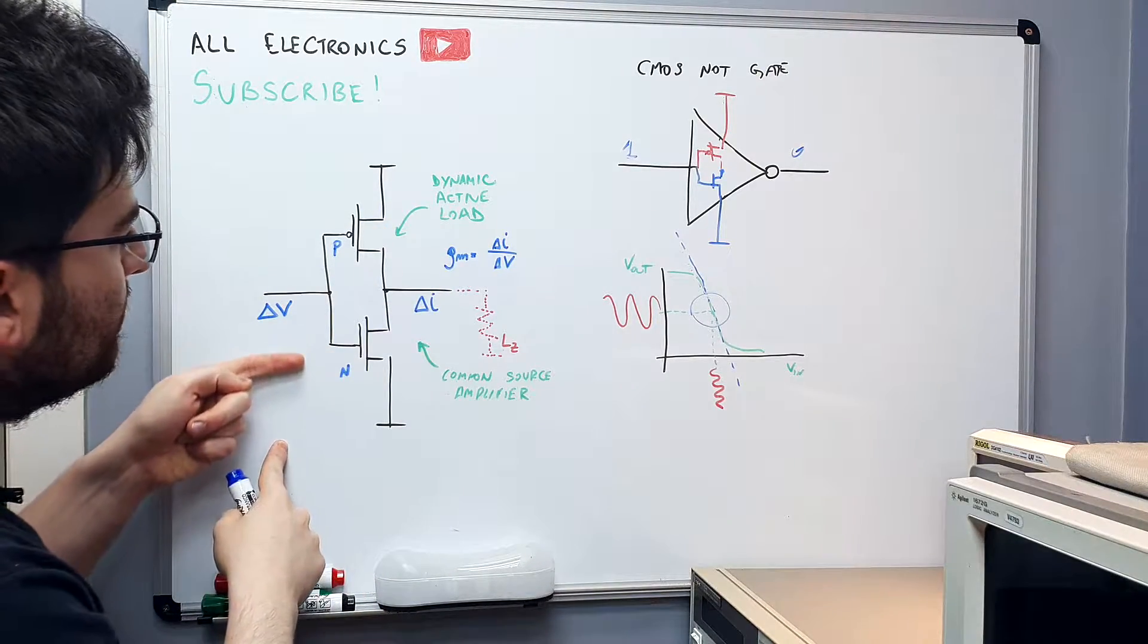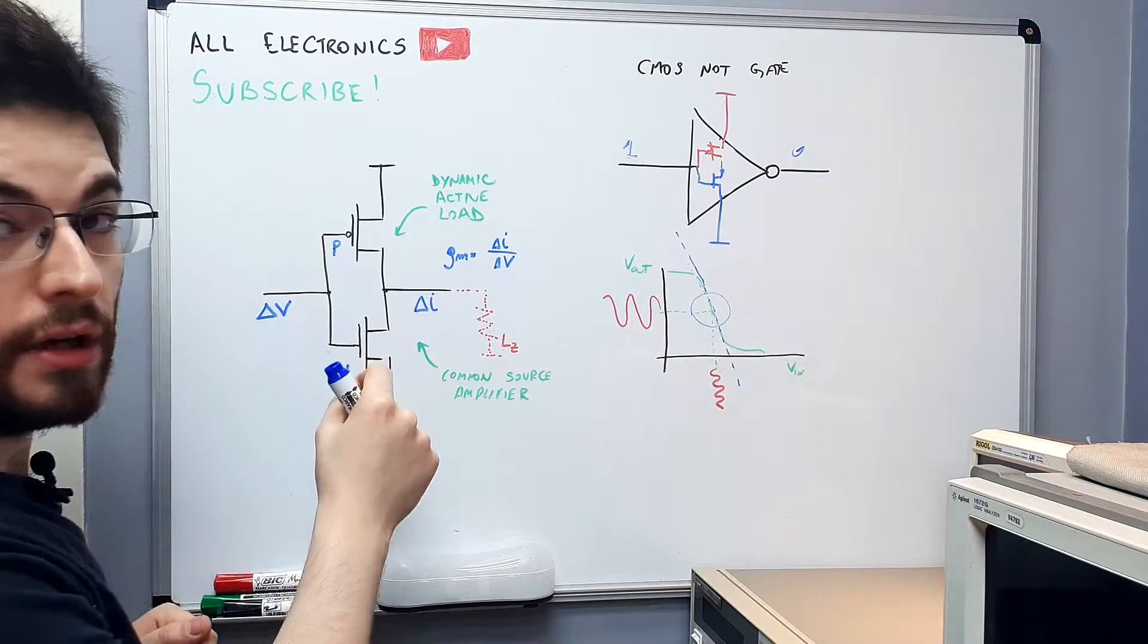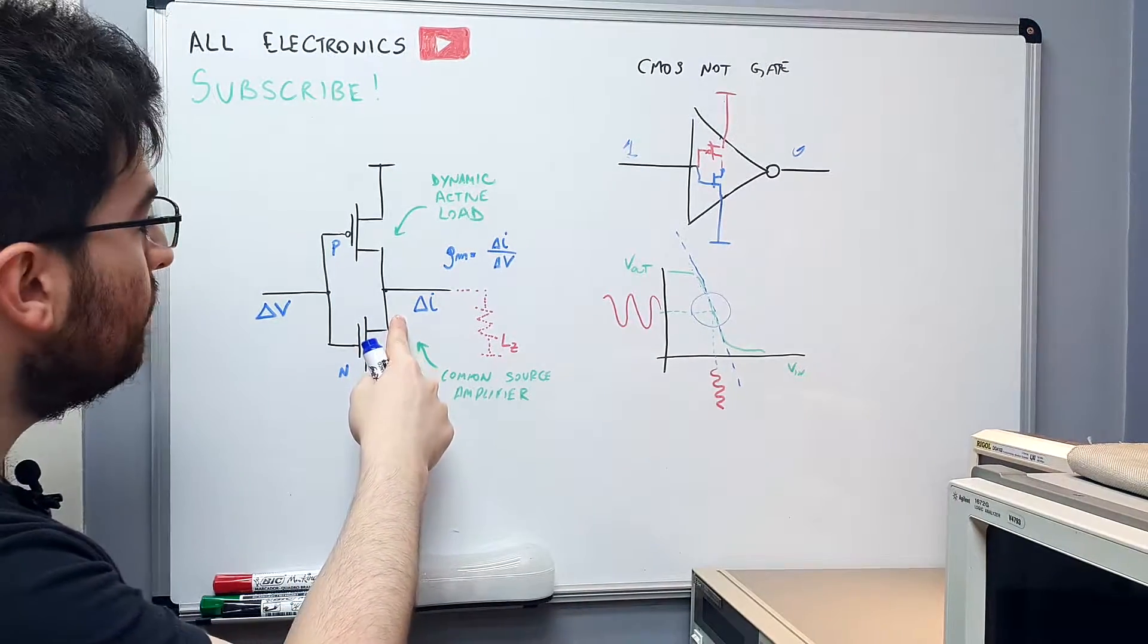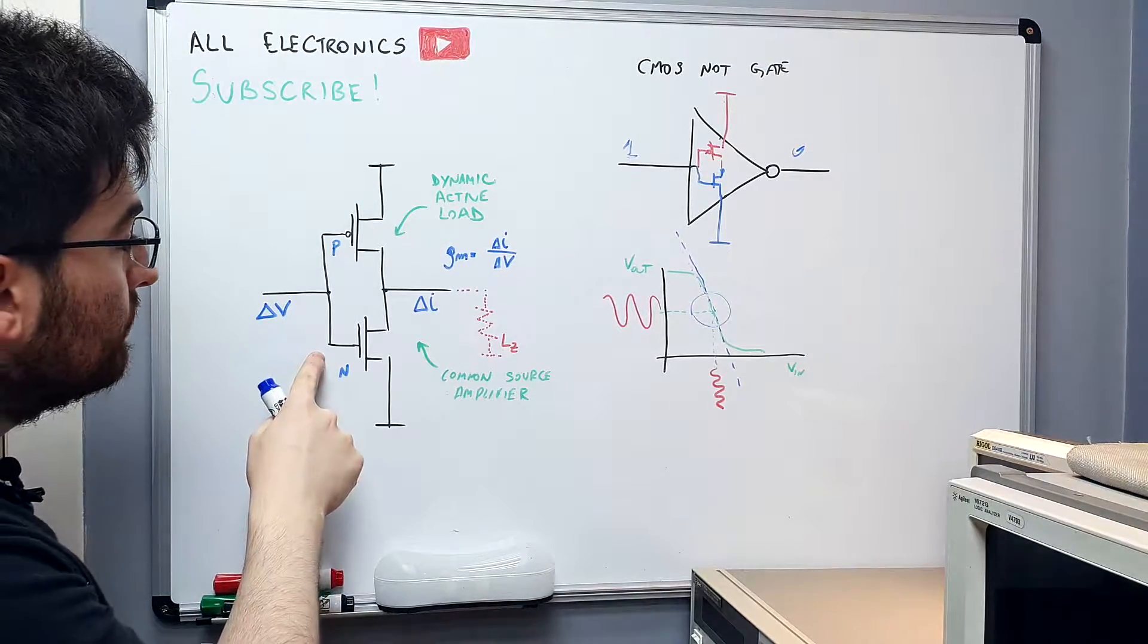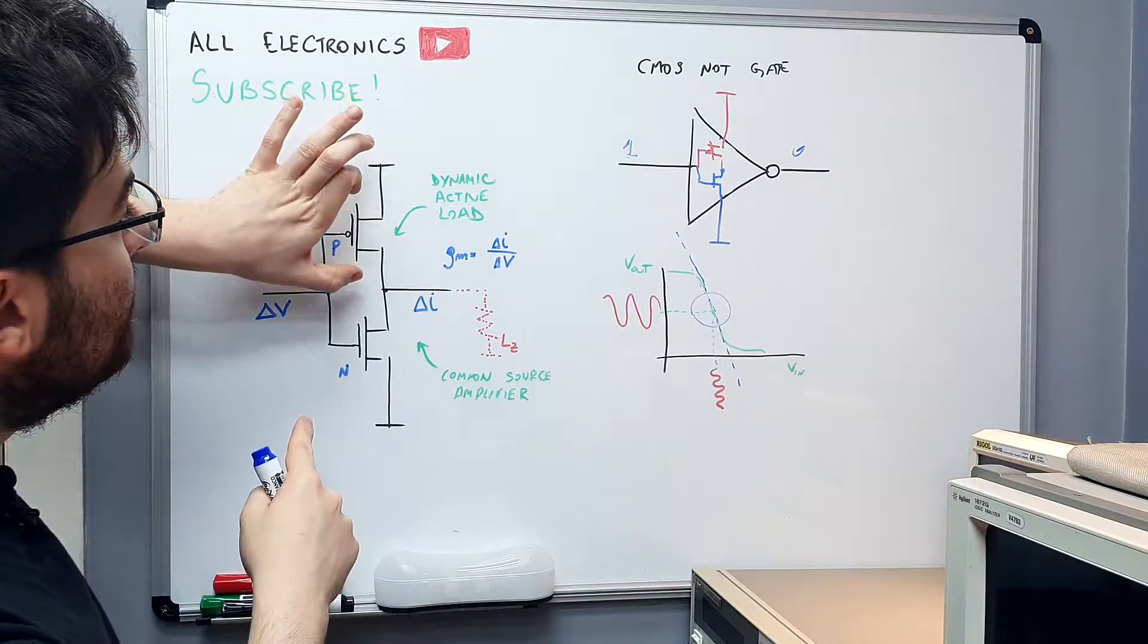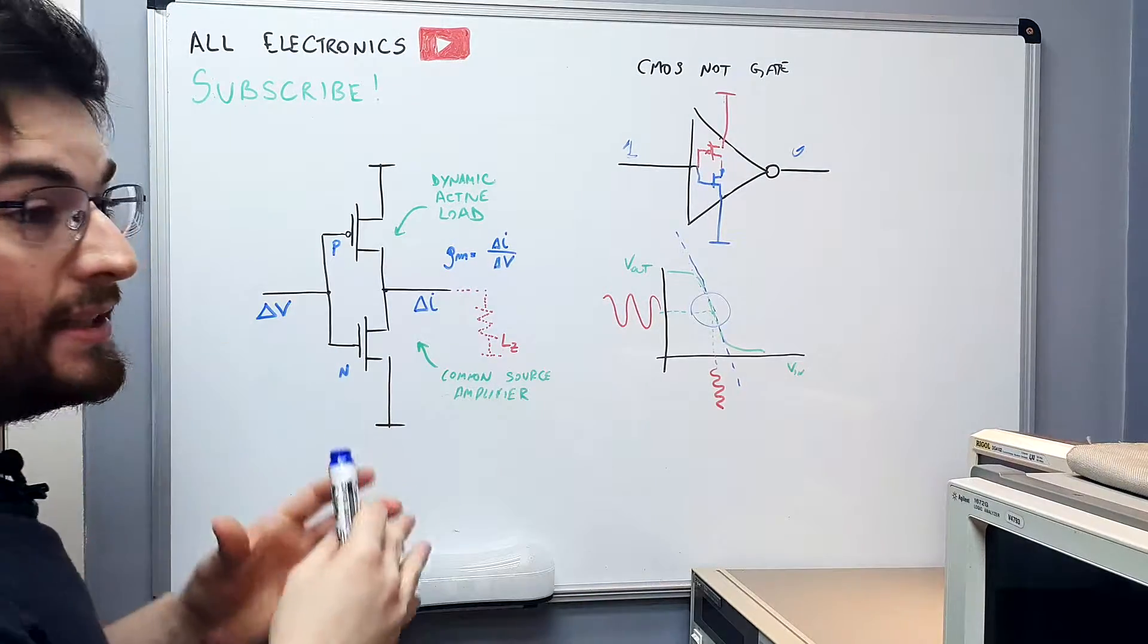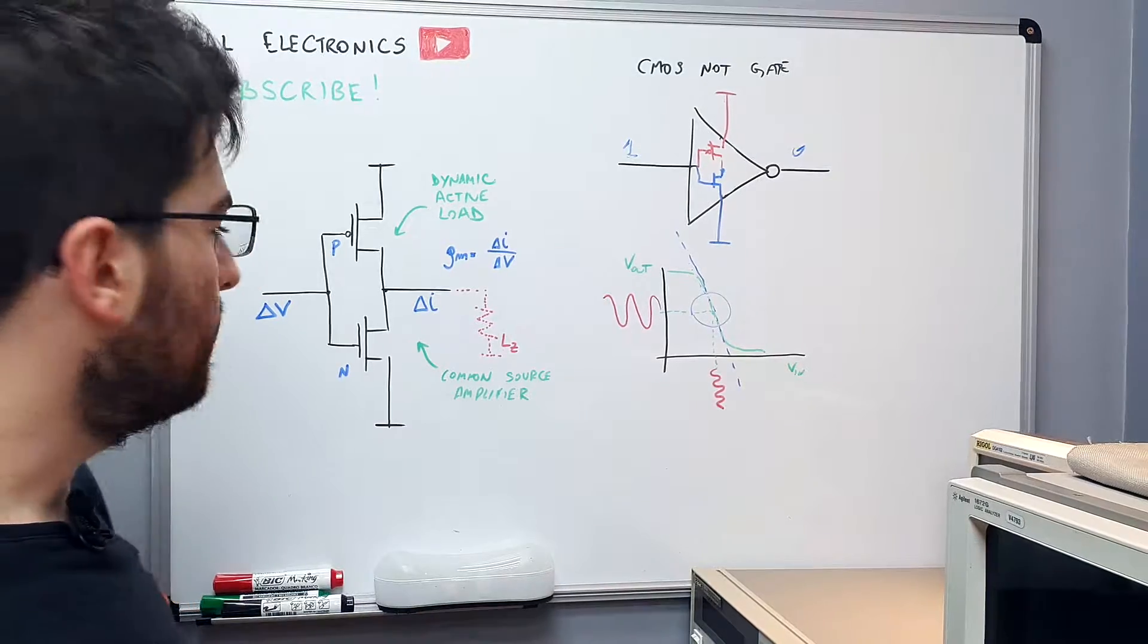A small signal on the gate of this NMOS device will modulate the current on the drain. The current here, from a small signal perspective, is proportional to the small signal voltage on the gate. If we had a resistance here, this resistance will transform this variation in current in an output voltage. This is the common source amplifier, NMOS common source amplifier.